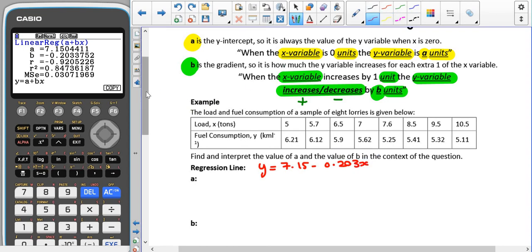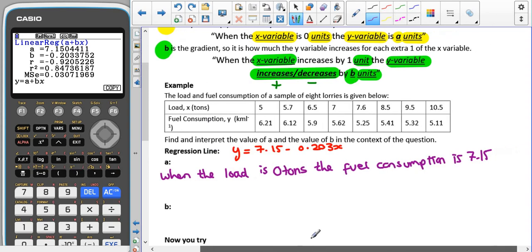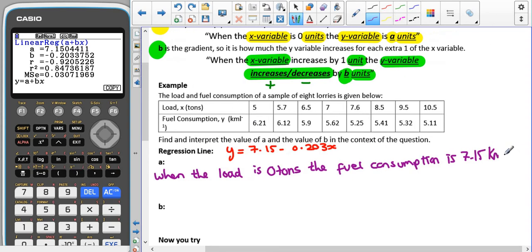So when we're interpreting what the value of a and the value of b are, remember that a is our first number here. Remember, we're interpreting it as this sentence here. So when the load is zero tons, fuel consumption is 7.15. And then we have to use the units for the y values, which are kilometers per liter.